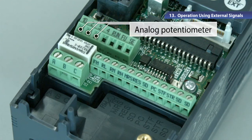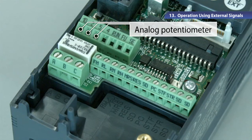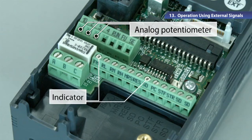The external potentiometer is wired to the terminals 10, 2, and 5, and the analog indicator has been wired to the terminals FM and SD.